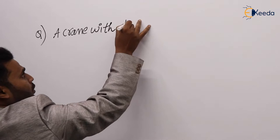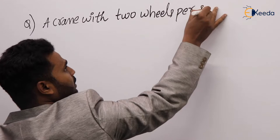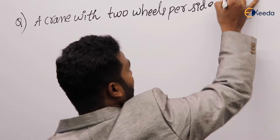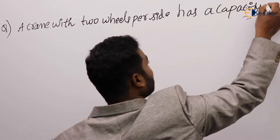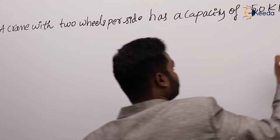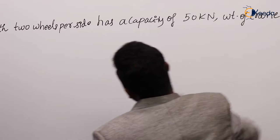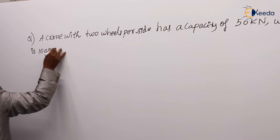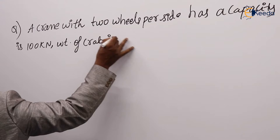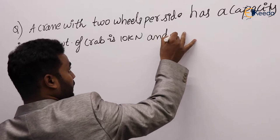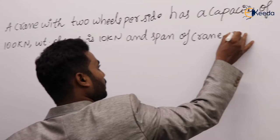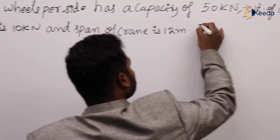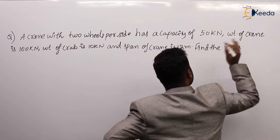A crane with two wheels per side has a capacity of 50 kilonewtons, weight of crane is 100 kilonewtons, weight of crab is 10 kilonewtons, and the span of crane is 12 meters. Find the maximum static wheel load.